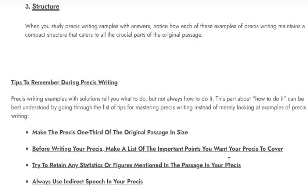Now, what are the tips to remember? First and foremost: make the précis one-third of the original passage in size. For example, if your original text is 330 words, you divide 330 by 3 and you get 110. So your précis should be 110 words — one-third of the original passage in size.